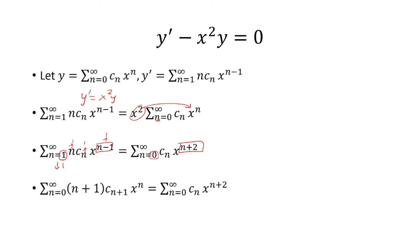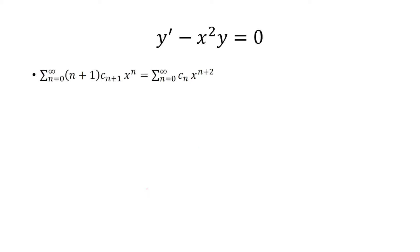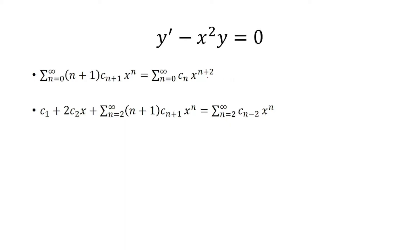Now I want to work on the x to the n plus 2 term, because that's a different exponent from x to the n. I want them to start at the same spot, at n equals 2. So if I make the lower index go up by 2, the n's inside have to go down by 2, giving c sub n minus 2 times x to the n. This starts at n equals 2, so n equals 0, n equals 1 are not included.